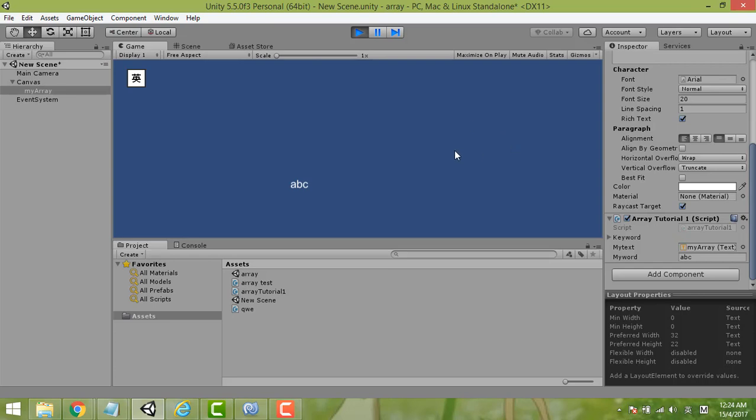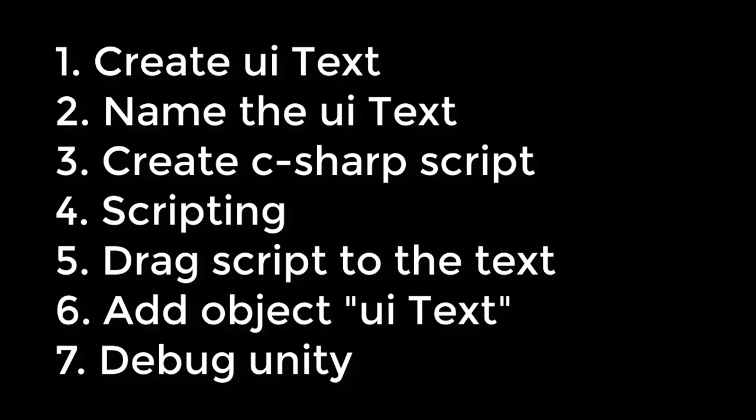Here is a summary of all seven steps. Step 1: create UI text. Step 2: name the UI text. Step 3: create C# script. Step 4: write the script. Step 5: drag the script to the text. Step 6: add object UI text. Step 7: debug in Unity. Hope you can do that too — bye!